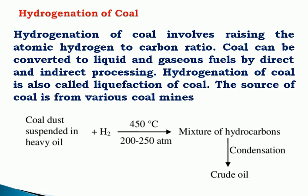Coal is hydrogen-deficient, so when the primary fuel is converted into the secondary fuel — that is, coal converted into petrol — hydrogenation is required. This process is called hydrogenation of coal. It involves increasing the atomic hydrogen-to-carbon ratio. Coal can be converted into liquid and gaseous fuels by direct and indirect processing. Hydrogenation of coal is also called liquefaction of coal.